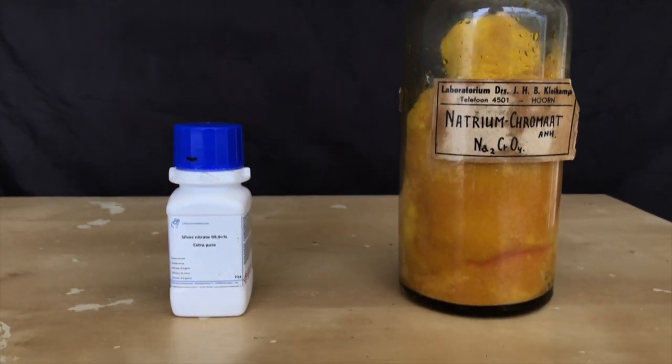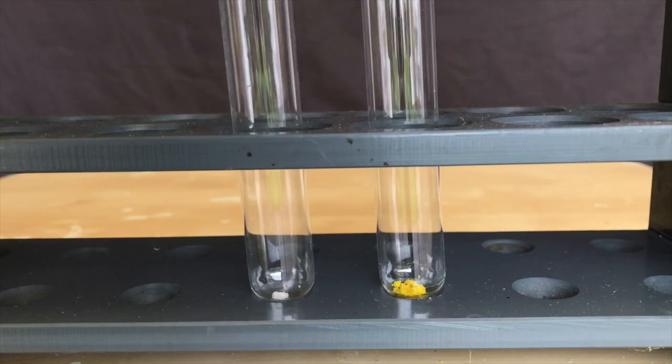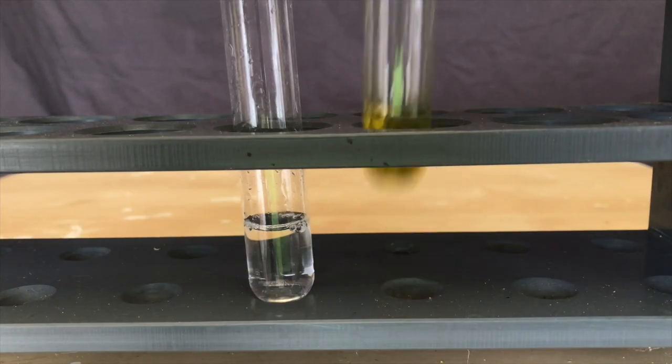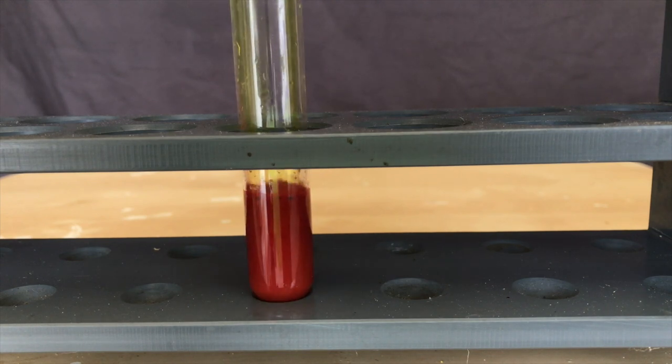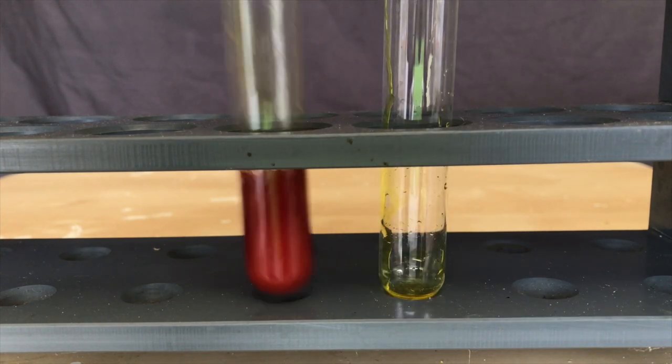For the next experiment, we are therefore going to need some sort of silver salt and sodium chromate. The silver nitrate on the left and the sodium chromate on the right were dissolved in a small amount of distilled water and then they were combined. Red precipitate immediately started to settle out. This is silver chromate.